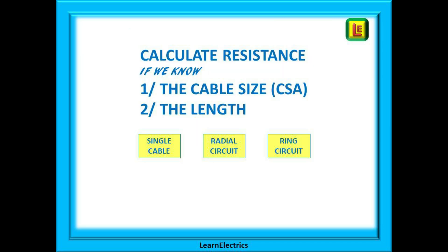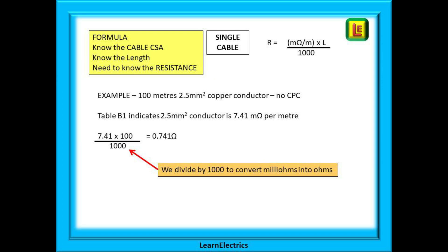Let's calculate some resistances using the tables. To do this we must know the cable size and the cable length. We can begin with a single cable. In this example the cable is 100 meters long and is of 2.5 millimeter copper. There is no CPC, just the single cable that we will measure from end to end.